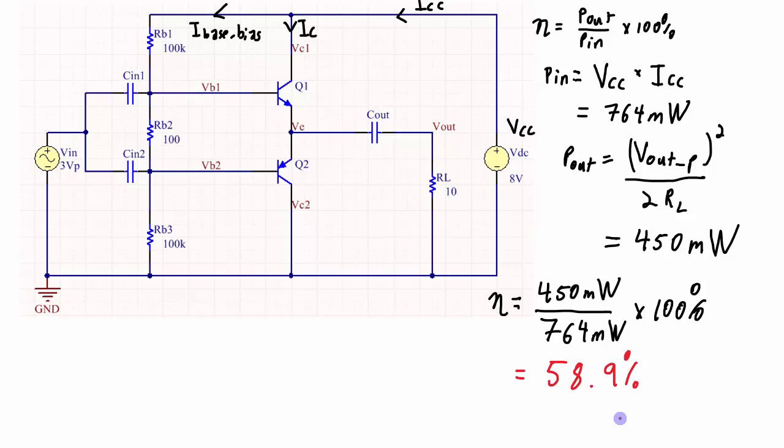Now if you remember what the maximum efficiency can be for a class B amplifier, you will notice that this is less than that maximum efficiency which is 78.5 percent. And the reason it's less than that maximum efficiency is because the output voltage across the load is less than the maximum voltage that it can be. The maximum voltage it can be is restricted by this source, so it's going to be around 4 volts peak. But my input is a 3 volt peak so my output will be approximately a 3 volt peak because the gain of this amplifier is approximately 1. I'm making a few assumptions there, but that's the general principle.